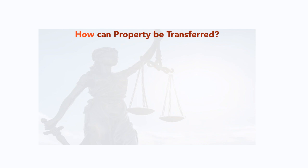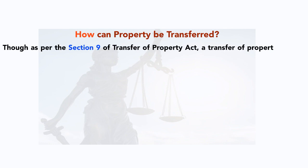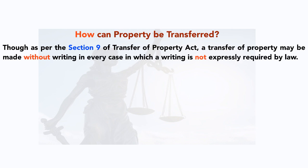The next point is how property can be transferred — the procedure to make a transfer enforceable so you are not cheated. As per Section 9 of the Transfer of Property Act, a transfer of property may be made without writing in every case in which writing is not expressly required by law. So if law does not require a written transfer, you can transfer your property orally, and that is as valid as a written one. But if the law prescribes it must be in writing, then an oral transfer won't be valid.